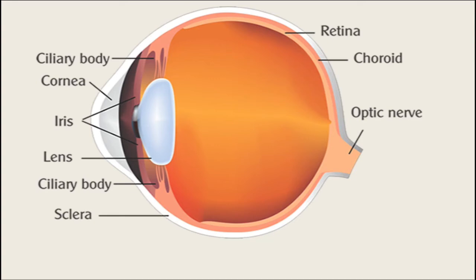In this way, the main parts of the eyeball are cornea, choroid, ciliary muscles, iris, lens, retina, and optic nerve.